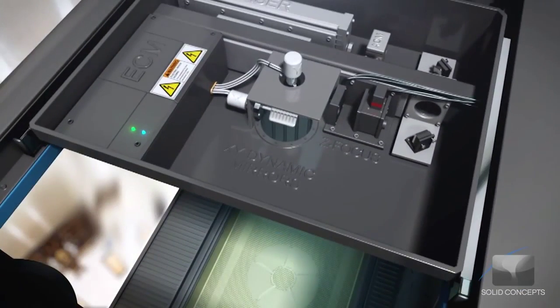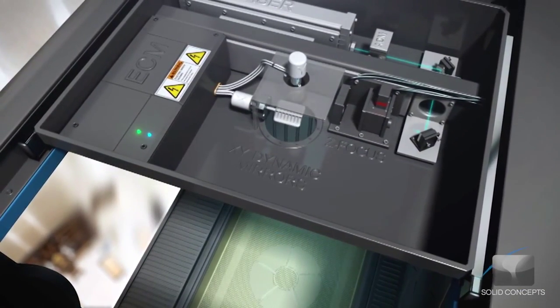The machine begins to build the part one layer at a time. Each layer is constructed from an ultraviolet laser that is directed by X and Y scanning mirrors.